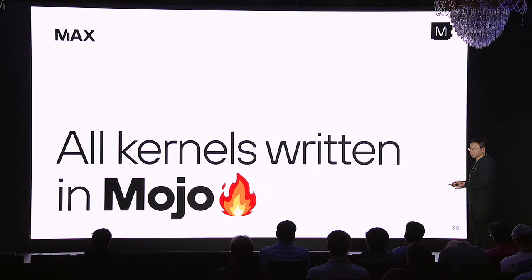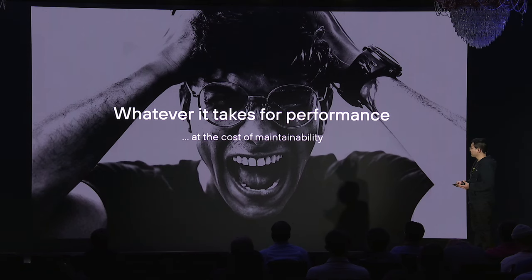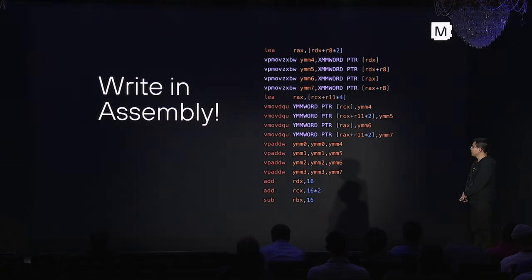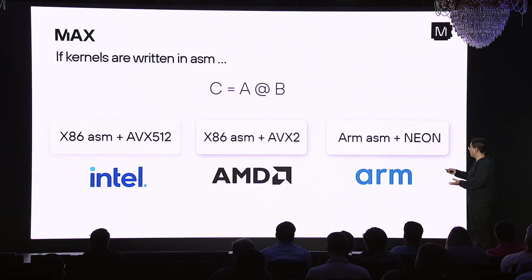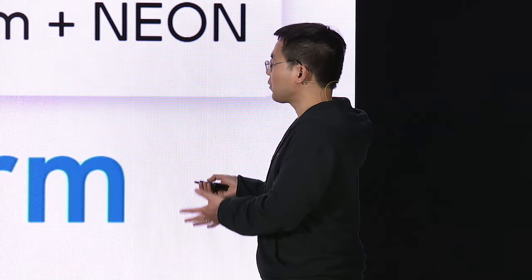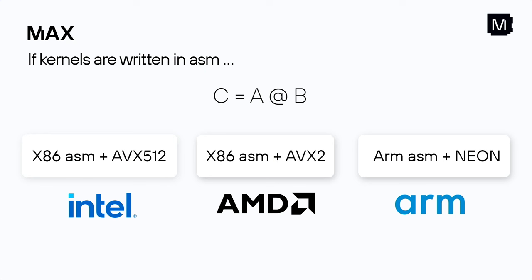More importantly, all the kernels in Max are written in Mojo. To understand why this matters, let's look at how other frameworks develop their kernels. State-of-the-art frameworks do whatever it takes to get performance — that means writing kernels in assembly. Writing kernels in assembly is powerful for a specific architecture, but if you write all your kernels in assembly, for something as common as matrix multiplication, you have to implement the same algorithm multiple times on different architectures using different instructions and even different assembly languages.